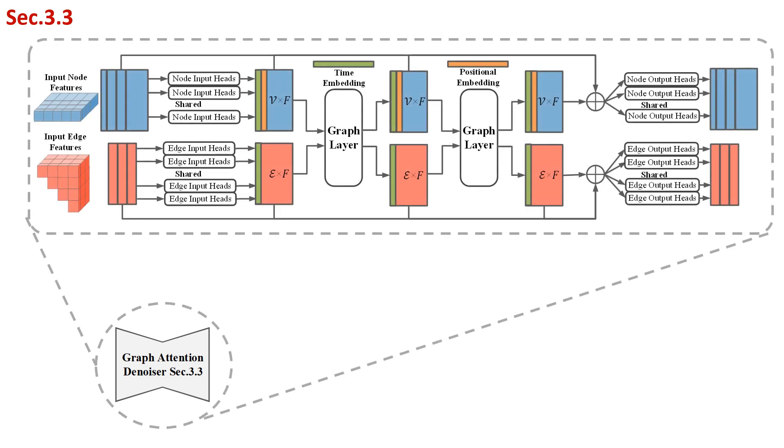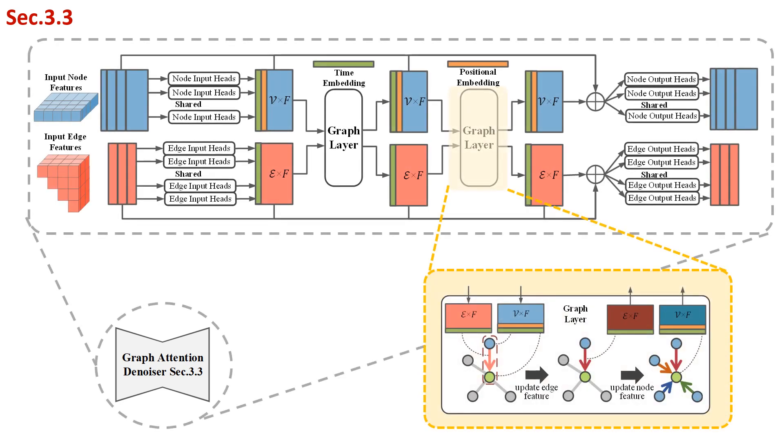In order to capture both the geometry and the motion structure whose distribution will affect each other, we design a graph attention encoder U-Net to gradually exchange and fuse information on the articulation graph. More details are in section 3.3.